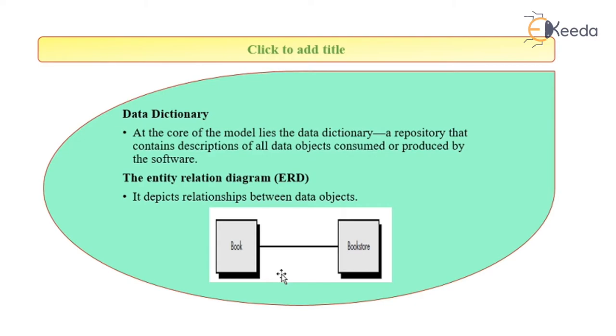Next is the ER diagram, which is also called entity relationship diagram. It shows the relationship between various data objects. For example, a book is present in the bookstore. The bookstore and the book become entities. The relationship is shown by a line between them.